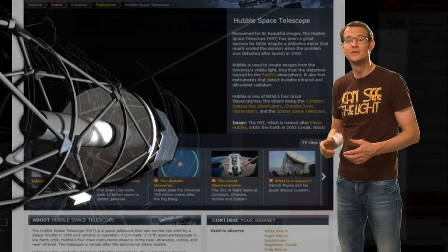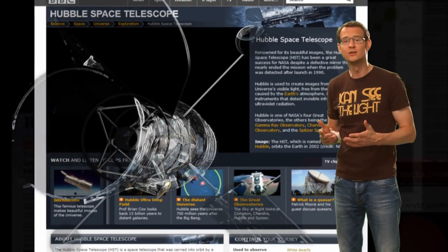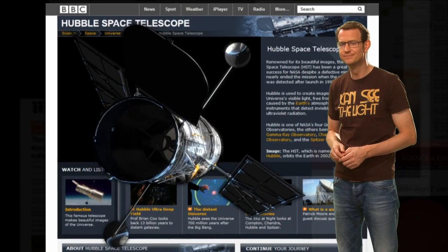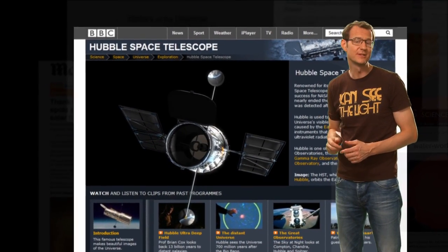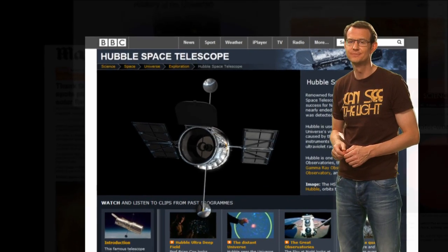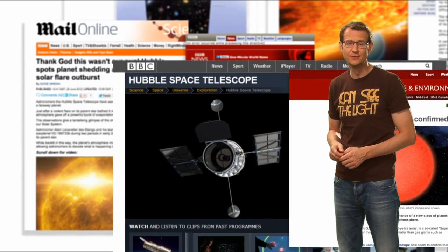Hubble has a couple of instruments on board that do this kind of science. They function a lot like high-tech versions of a prism, except they work even on the faintest of galaxies and can take extremely precise measurements of brightness.